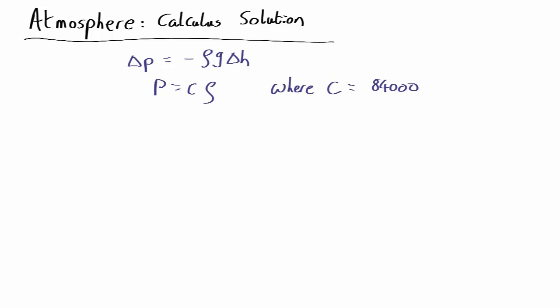Okay, now let's try and solve this using calculus. Our equations were that the pressure change over a slab of air is proportional to minus the density, and the pressure and density related by this, where we fixed a constant by using sea level data.